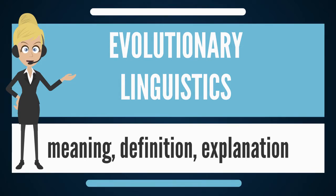Conversely, Derek Bickerton and others argue that the advent of abstract words provided a mental basis for analyzing higher-order relations, and that any communication system that remotely resembles human language utterly relies on cognitive architecture that co-evolved alongside language. As it leaves no fossils, language's form and even its presence are extremely hard or impossible to deduce from physical evidence.